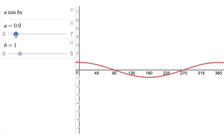If we go to 0.5, it starts off at 0.5, a half and goes down to negative a half. So a gives you the amplitude.